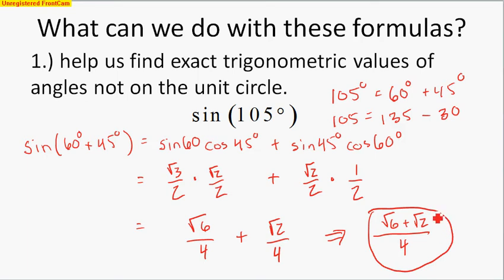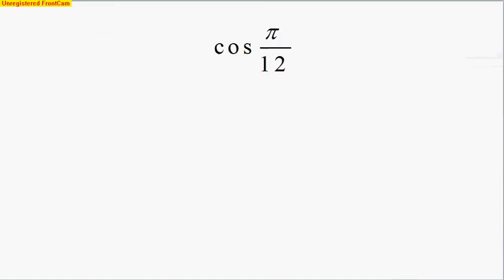That is an exact answer. If we type sine of 105° into our calculator, we'd get the same decimal equivalent — but what's nice is that we now have a way to get an exact answer. Let's look at another one: cosine of pi over 12. We don't have pi over 12 on our unit circle, so we want to find two angles we do recognize.